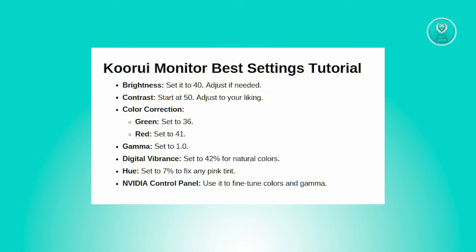Next is going to be the color correction. First is the green channel — this setting allows you to adjust the amount of green in the display. Open the menu and look for color settings or color adjustment, find the green channel setting, and reset it to the default value, which is usually around 50. We also have the red channel, which adjusts the red color balance. Locate the red channel adjustment in the color settings and set it back to default, which is typically around 50.